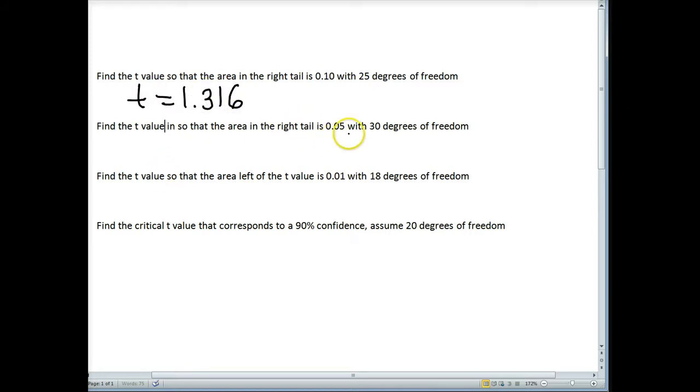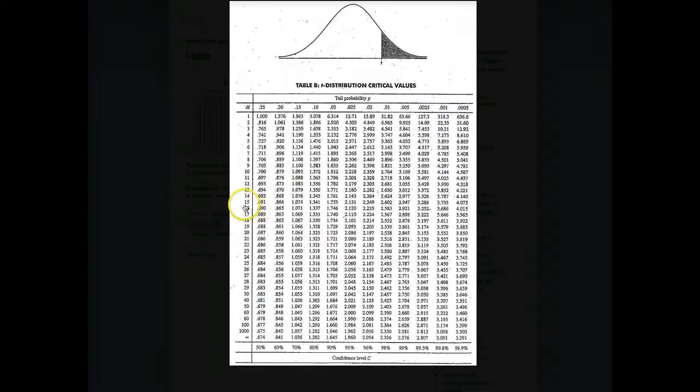Find the t-value so that the area in the right tail is 0.05 with 30 degrees of freedom. So we look for 30 degrees of freedom in our column. That's very indicative of the sample size. Degrees of freedom is the number of data points in a sample minus 1. And then we want to look over to the 0.05. 1.697.